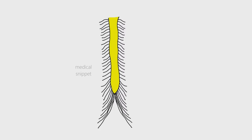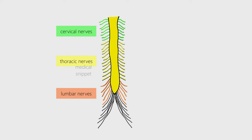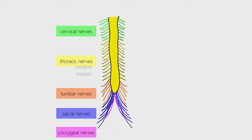The spinal nerves are subdivided into cervical nerves, thoracic nerves, lumbar nerves, sacral nerves, and coccygeal nerves, according to the intervertebral foramina they emerge from. There are 8 pairs of cervical nerves, 12 pairs of thoracic nerves, 5 pairs of lumbar nerves, 5 pairs of sacral nerves, and 1 pair of coccygeal nerves.